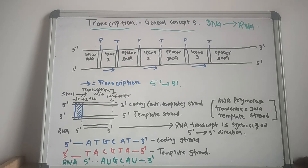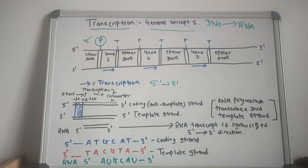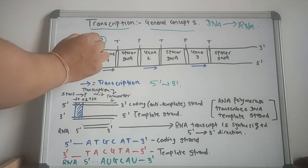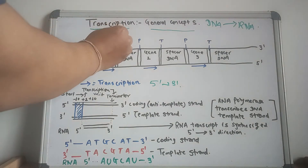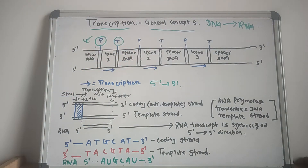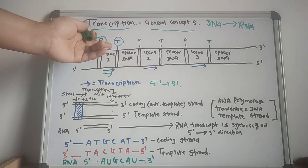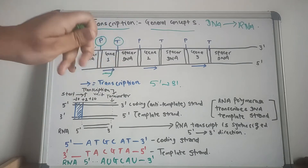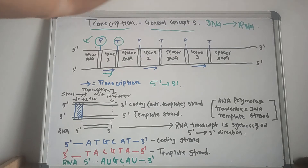The RNA polymerase recognizes start signals, that is promoters, and stop signals, that is terminators, for each of the thousands of transcription units in the genome of the organism. So RNA polymerase recognizes the promoter, it recognizes the terminator, and in between them the gene from the DNA is transcribed in the three prime to five prime direction.